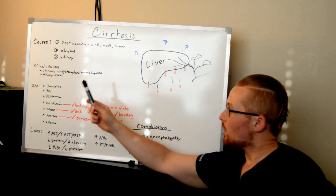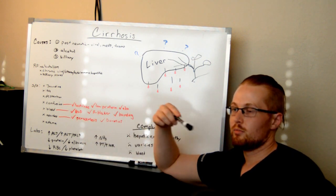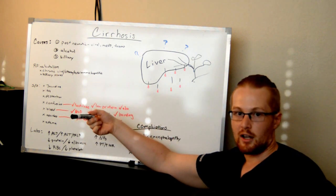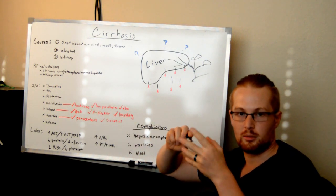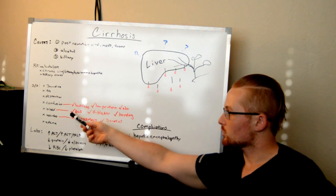The liver also assists with making the clotting factors for the blood. If you have a cut of some sort, the clotting factors work together to stop the bleeding. They're at risk for bleeding because they can't make those clotting factors.